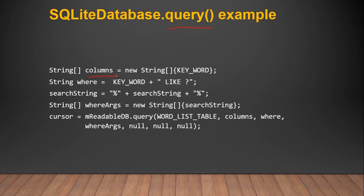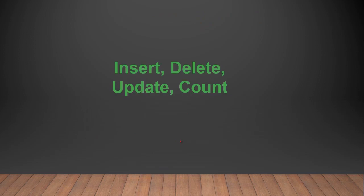To set up the query parameters: specify which columns you want — for example, just the keyword column — inside a string array. If you want to get this column based on a condition, create a WHERE variable and use a question mark placeholder. The question mark is a placeholder substituted by the selection argument. Pass the searching string variable to the string array as the WHERE clause, then call the query method passing table name, columns, WHERE clause, and WHERE args. Pass null for GROUP BY, HAVING, and LIMIT if not needed.